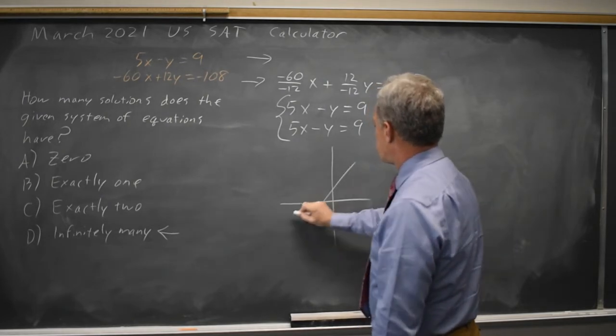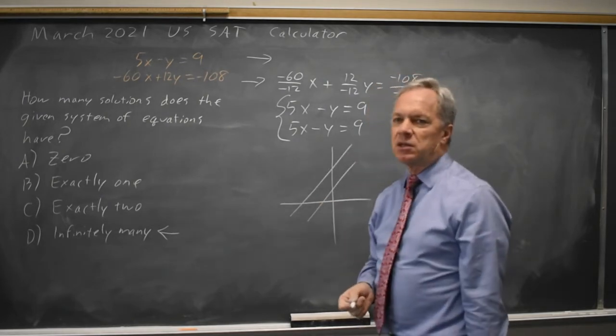So the same slope, different intercepts, looks like this, parallel. There are no solutions.